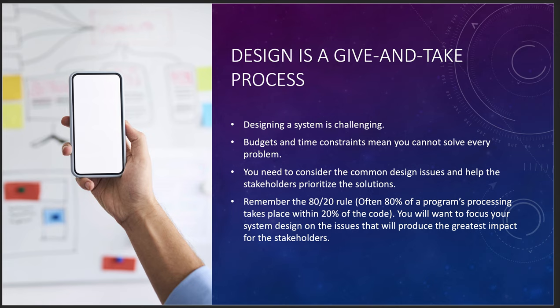You've got to consider common design issues, help the stakeholders prioritize those solutions, and remember the 80-20 rule — 80% of your program's processing takes place within 20% of the code. Focus on system design that will produce the greatest impact for all stakeholders. That can be really politically sensitive. Just be prepared to give and take, because things can become really political super fast in ways that make no sense for the design you're building, but make perfect sense for how the company operates politically.